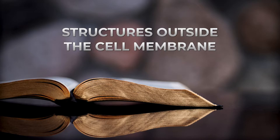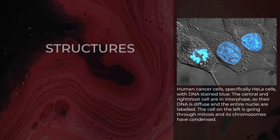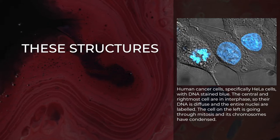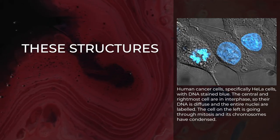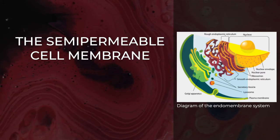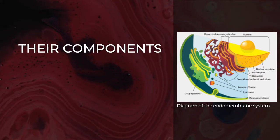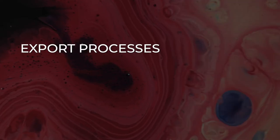Many cells also have structures which exist wholly or partially outside the cell membrane. These structures are notable because they are not protected from the external environment by the semi-permeable cell membrane. In order to assemble these structures, their components must be carried across the cell membrane by export processes.